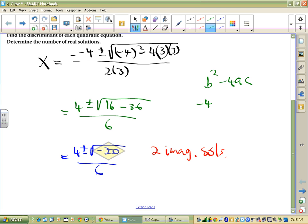So the negative 4 squared minus 4 times 3 times 3, that's the discriminant. That's 16 minus 36, and that's negative 20. And since it's less than 0, that's why there's two imaginary solutions. So that's what we were looking for you to have done on number 4.